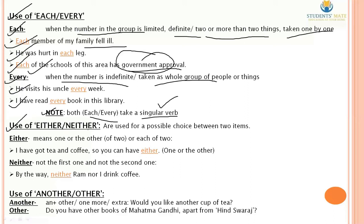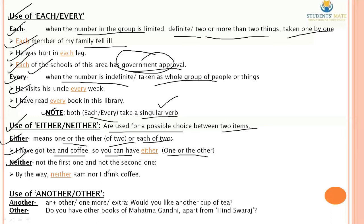Use of 'either' and 'neither'. Both are used for a possible choice between two items. 'Either' means one or the other of two, or each of two — used in affirmative sense. For example: 'I have got tea and coffee, so you can have either' — meaning one or the other. 'Neither' is used in a negative sense — not the first and not the second. Example: 'Neither Ram nor I drink coffee.'